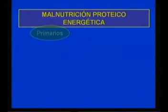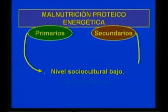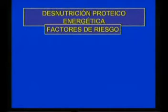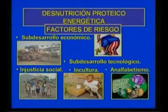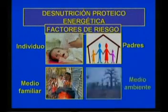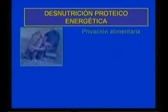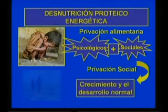En el caso de que se mezclen factores primarios y secundarios, como se observa con frecuencia en pacientes de nivel sociocultural bajo que además sufren de una enfermedad de base, entonces se trata de una desnutrición de causa mixta. Los factores de riesgo y la alta prevalencia de la desnutrición proteico-energética están muy relacionados con el subdesarrollo económico y tecnológico, la injusticia social, la incultura y el analfabetismo. La desnutrición proteico-energética es el resultado de una privación no sólo alimentaria, sino social, donde interactúan factores psicológicos y sociales que repercuten sobre el crecimiento y el desarrollo normal del individuo.